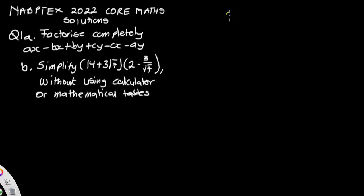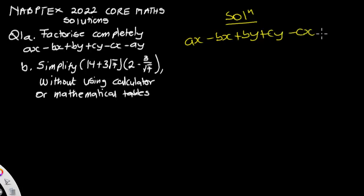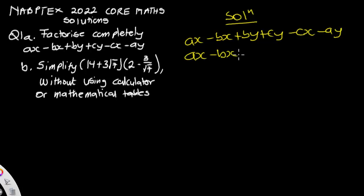From question 1a we have ax minus bx plus by plus cy minus cx minus ay. We are going to start by grouping like terms — all the terms involving x on one side and all the terms involving y on another side. So we are going to have ax minus bx minus cx, plus by plus cy minus ay.